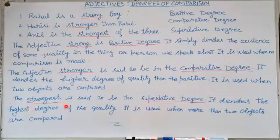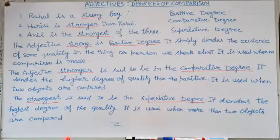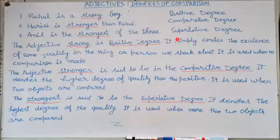The 'strongest' is said to be the superlative degree. It denotes the highest degree of the quality. It is used when more than two objects are compared. So in the third sentence, 'strongest' is the superlative degree, and it is the highest degree of the quality.